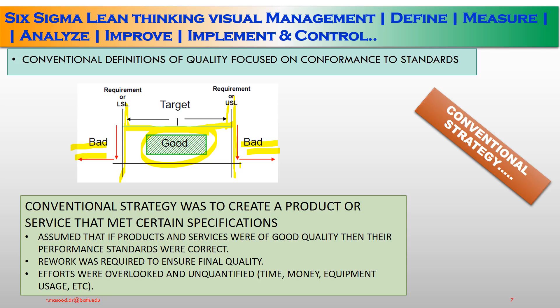Conventional strategy was to create a product or service that met certain specifications, and assumed that if products and services were of good quality, then their performance standards were correct. Second, rework was required to ensure final quality. Third, efforts were overlooked and unquantified — time, money, equipment usage, etc. That is how the conventional strategy was adopted as far as quality is concerned.